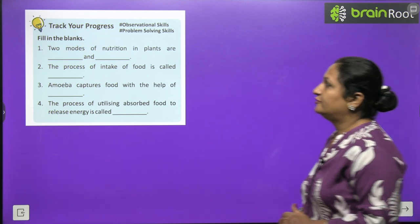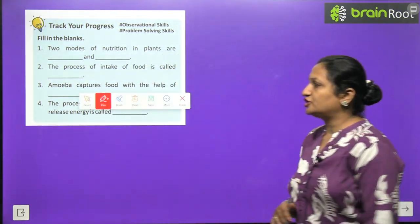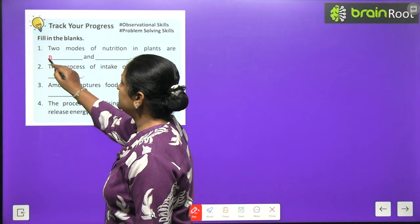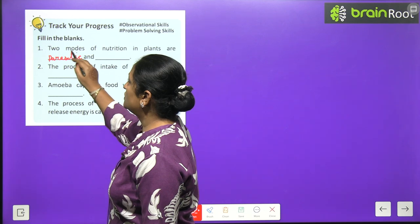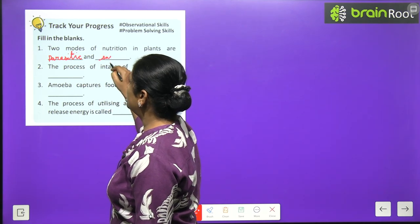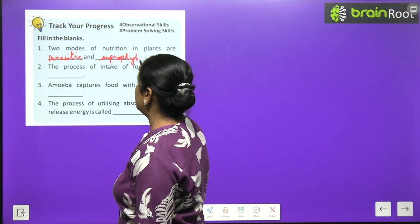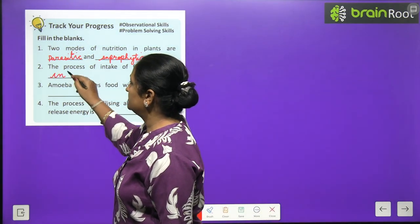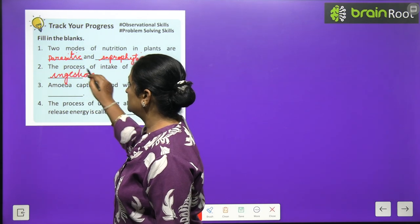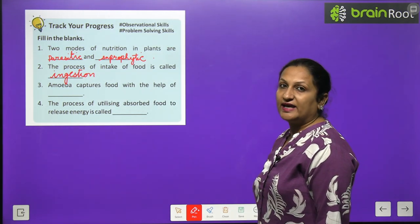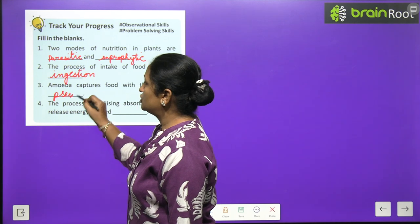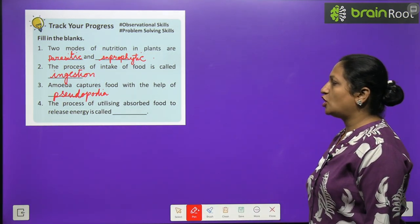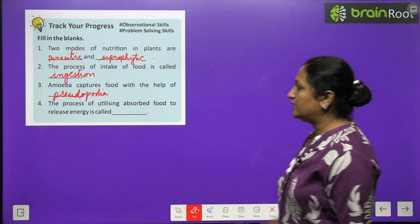Track your progress: Two modes of nutrition in plants — nutrition can be parasitic, saprophytic or symbiotic. The process of intake of food is called ingestion. Amoeba captures food with the help of pseudopodia. The process of utilizing absorbed food to release energy is called assimilation.